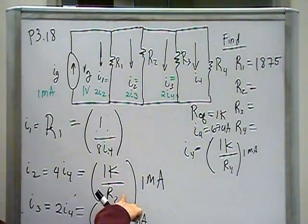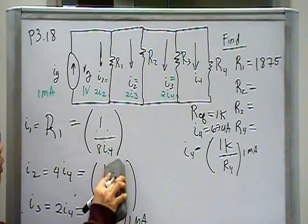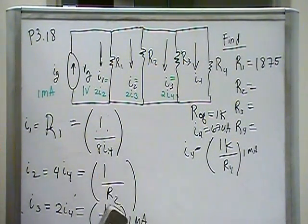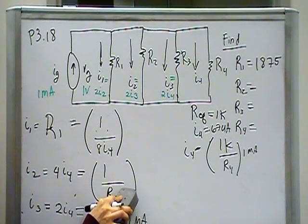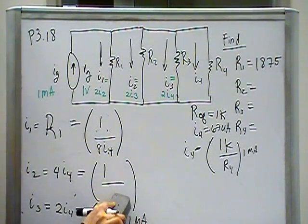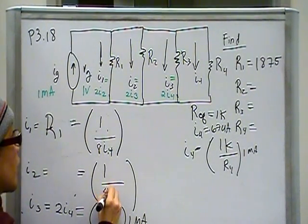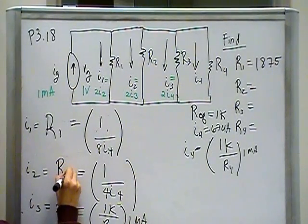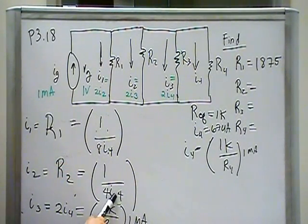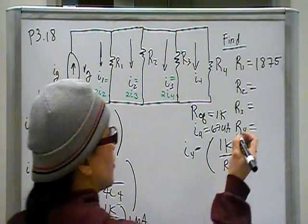Same thing here. Millis cancel out with kilos to give you 1. R2 is in the denominator. 4I4 is here. You can swap the two places, put 4I4 here and R2 here. Substitute 67 microamps for I4 and you should come up with a value for R2 of 3750 ohms.